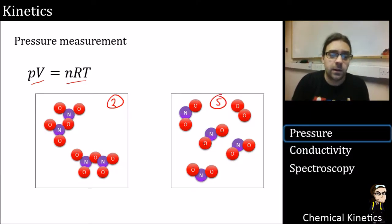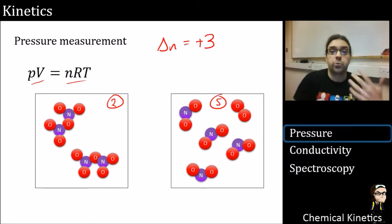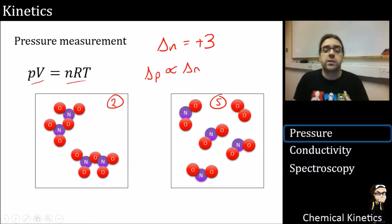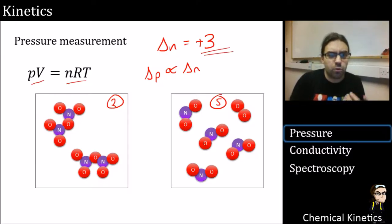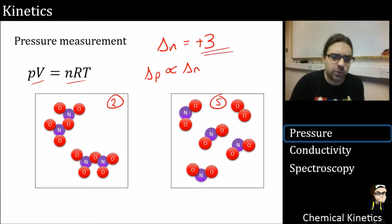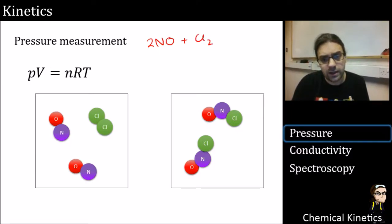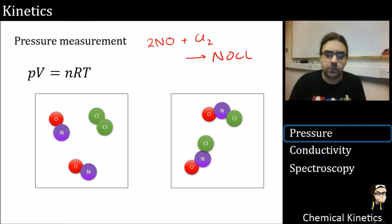Count them up: if there's a change in number of moles in a reaction equal to plus three, three moles are appearing. Our change in pressure is going to be proportional to that change in number of moles, so the pressure will increase — in fact, just over double. We're going to focus mostly on this other reaction: 2NO + Cl₂ → 2NOCl.